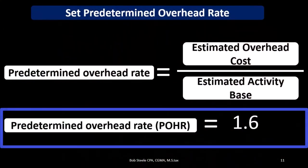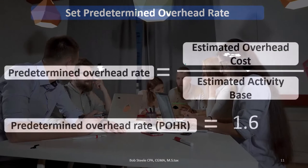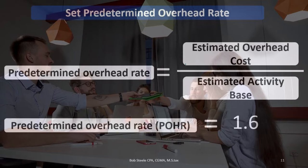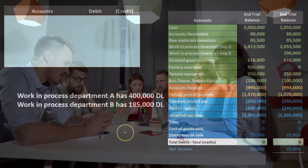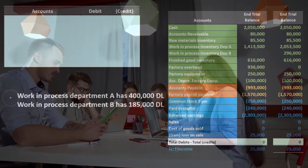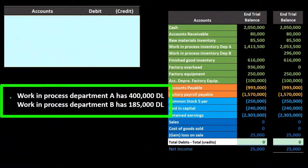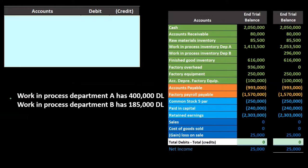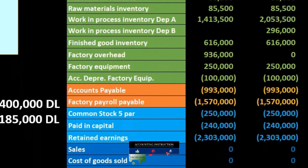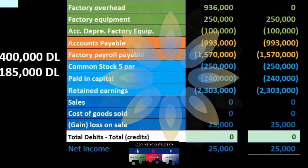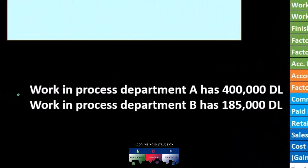Our predetermined overhead rate in this example is 1.6. We calculate that by taking the estimated overhead costs from the prior period and dividing by our activity base — in this case, direct labor. That gives us the predetermined overhead rate of 1.6. Department A has $400,000 in direct labor and Department B has $185,000 in direct labor, and we'll use those numbers to apply out the overhead.